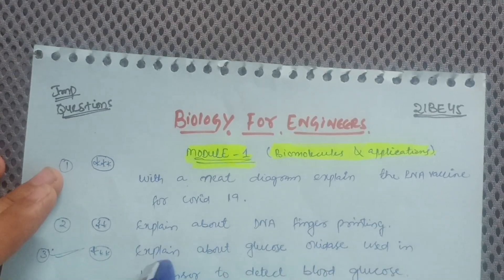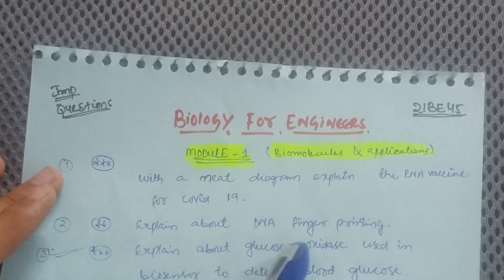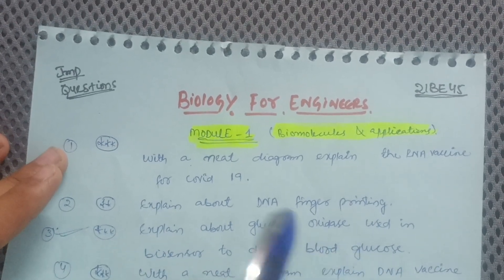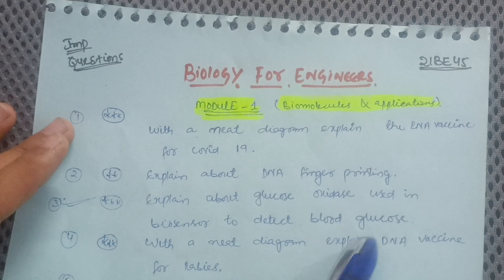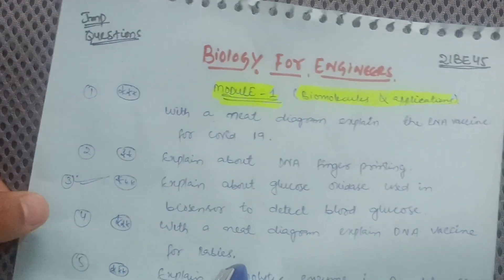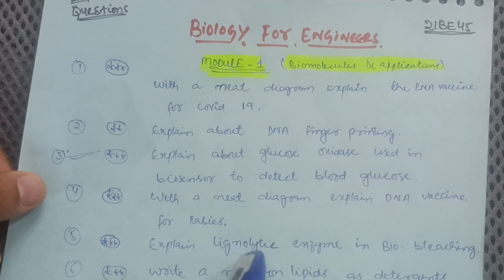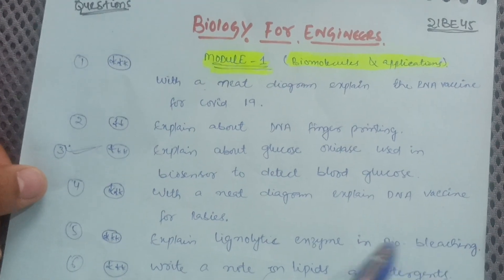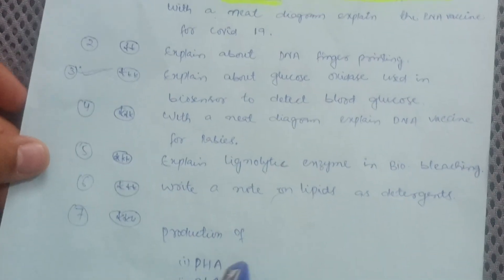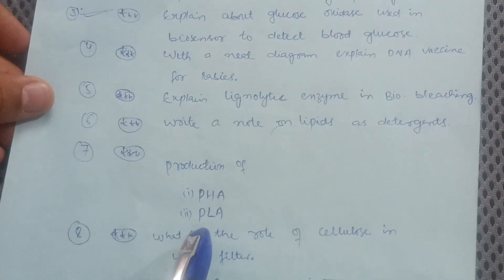Next one is explain about DNA fingerprinting. Most important one. Next, explain about glucose oxidase used in biosensor to detect blood glucose. Then with a neat diagram explain DNA vaccine for rabies. Most important one. Then explain lignolytic enzyme in bio bleaching and write a note on lipids as detergents.